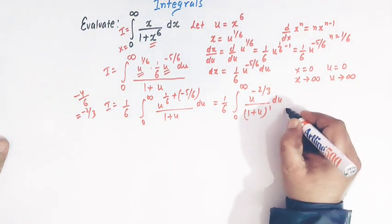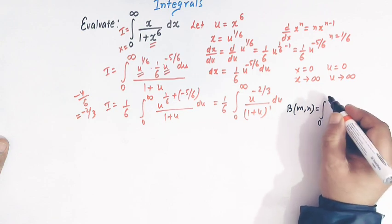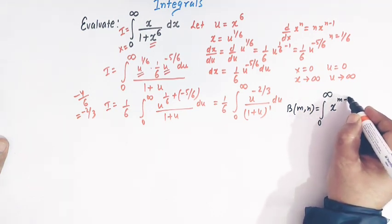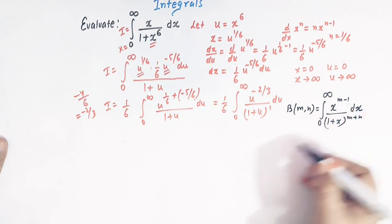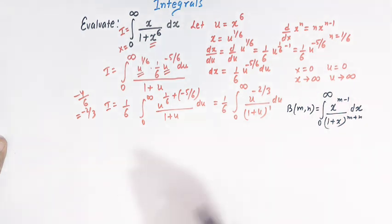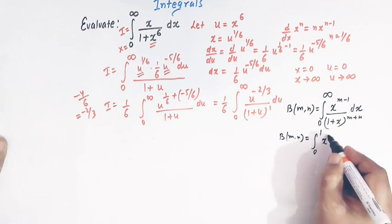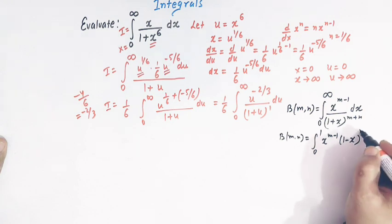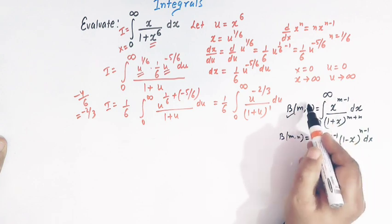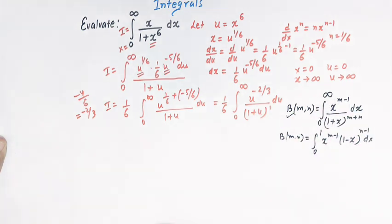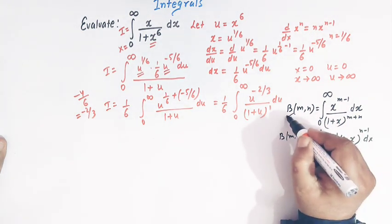The beta function is defined as: beta(m, n) equals the integral from 0 to infinity of x raised to m minus 1 divided by 1 plus x raised to m plus n, dx. This is another form of the beta function — the usual form also exists — and the beta function is also known as Euler's integral of the first kind. We will make use of this result.